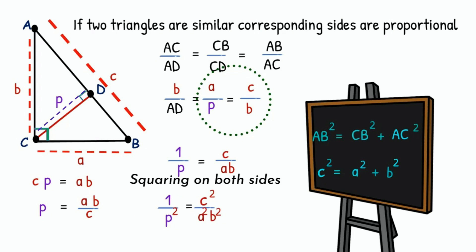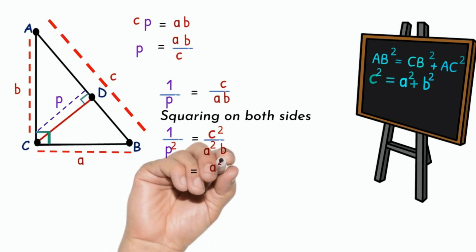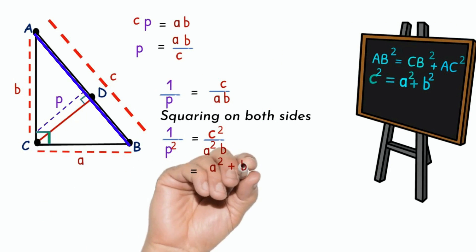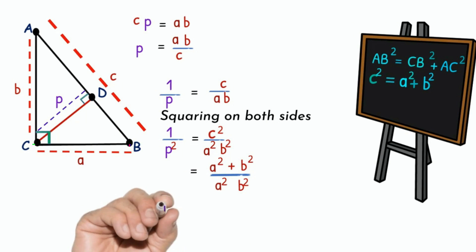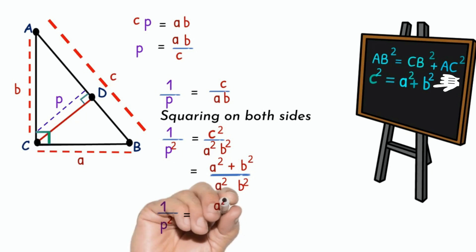AB is the hypotenuse of triangle ACB. By Pythagorean theorem, square of AB equals square of CB plus square of AC. That is, C square equals A square plus B square, equals A square plus B square by A square into B square.